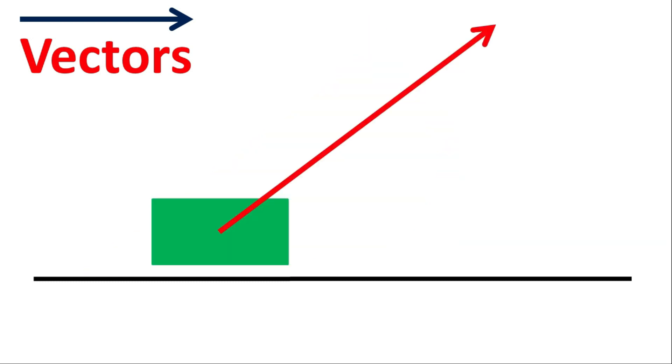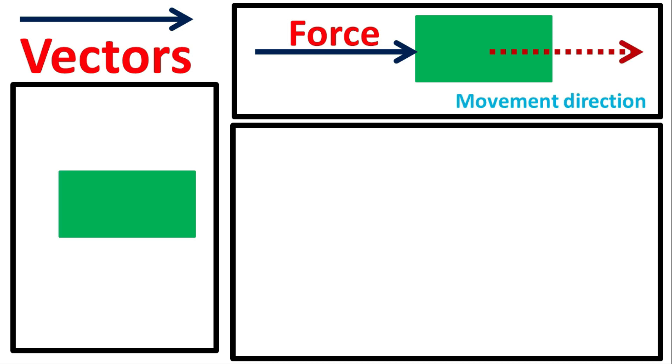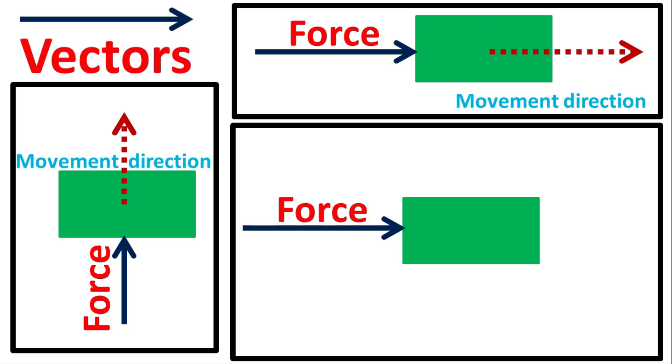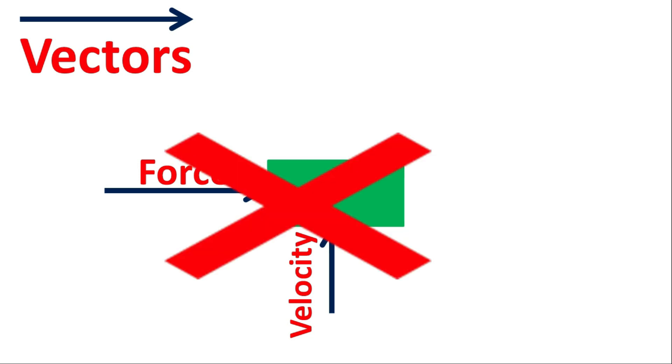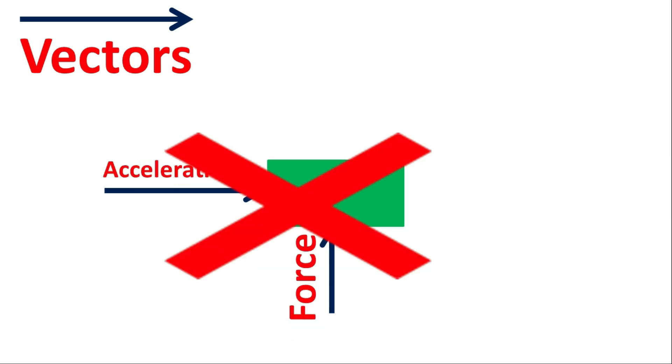That means if we apply one force on any object, then the object will move with the direction of the force. But if we apply two forces together like this, then the object will not move in the direction of any of these forces but in a different direction like this. It is called the addition of vectors. We must remember that this concept works on same quantities like force and force, velocity and velocity, acceleration and acceleration, not on two different quantities like force and velocity, velocity and acceleration, and force and acceleration.